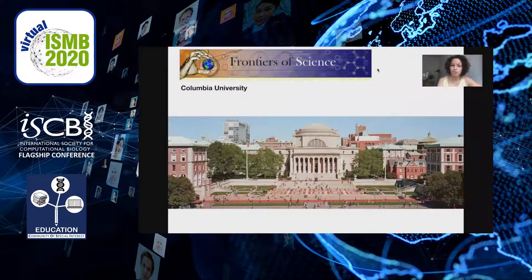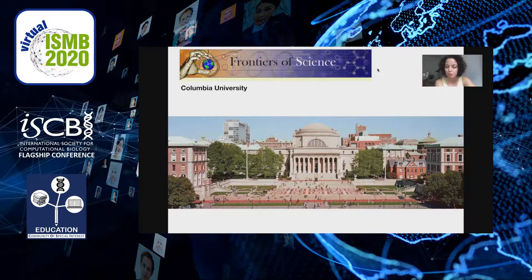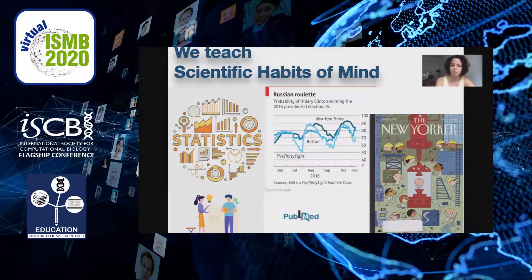I teach a core course called Frontiers of Science at Columbia University. All first-year students take this course before deciding on their majors. As you can imagine, we have a lot of students — more than 500 students per semester — so therefore there are around 15 instructors who teach this very same course. We teach scientific bits of mind, which are the basics of probability and statistics, how to read a graph in a scientific article, how to design experiments, how to come up with a hypothesis and how to test it, and how to read articles in general.